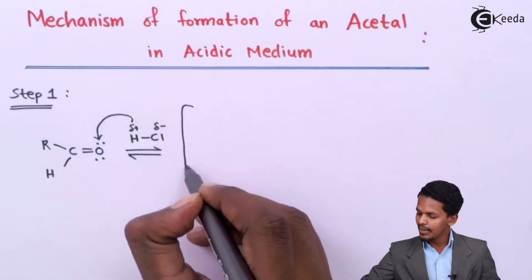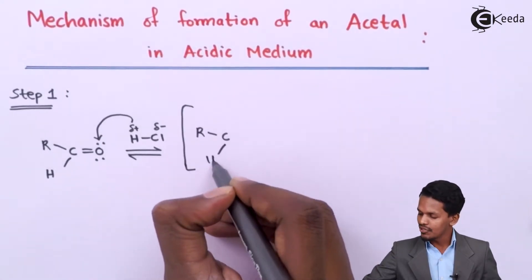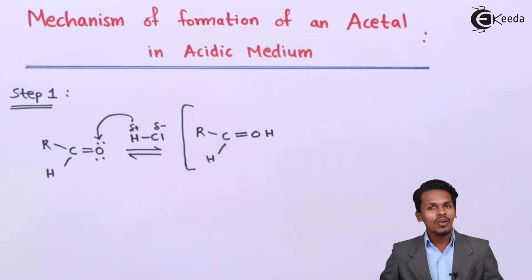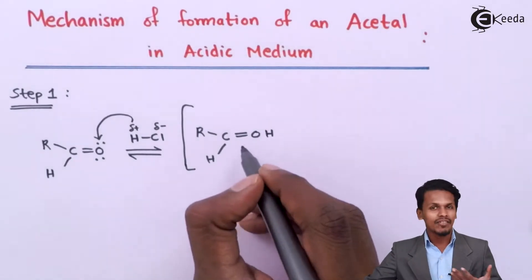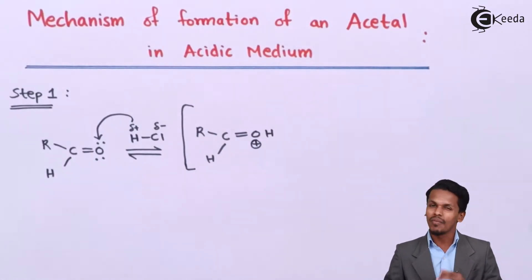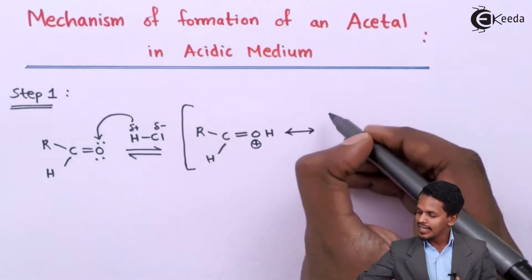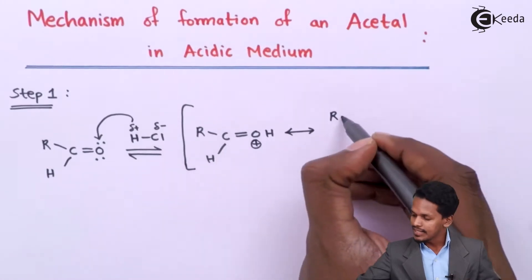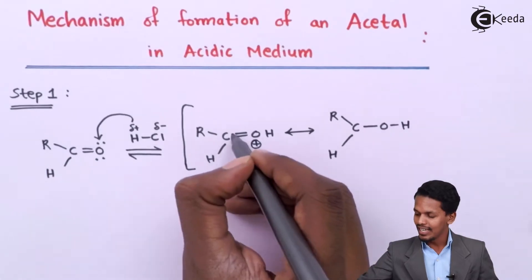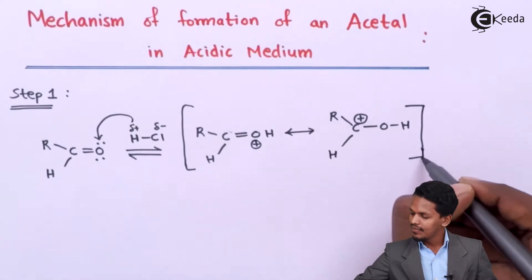So the intermediate formed is RCH double bond OH, but since the valency of oxygen is normally 2 and here it would be 3, there will be a positive charge on the oxygen atom. This is a very unstable intermediate. By resonance, we get a more stable form: RCHOH with a positive charge on the carbon.